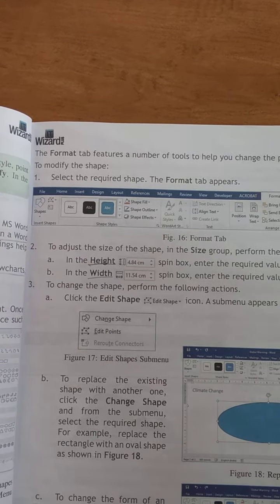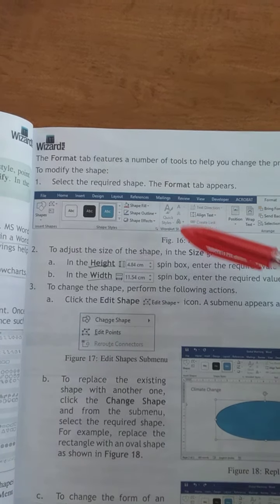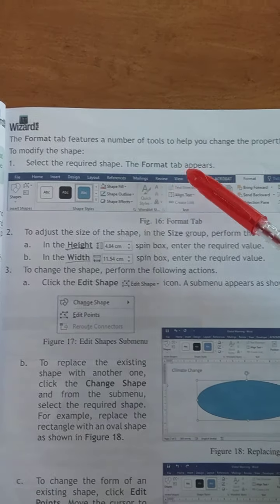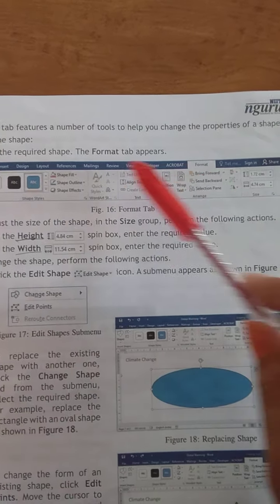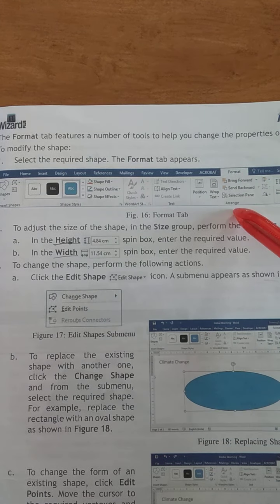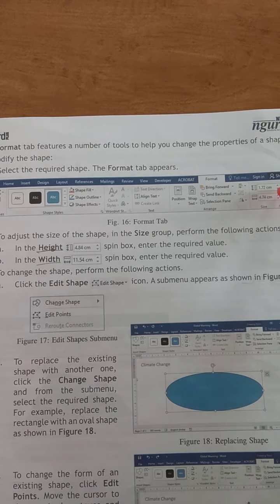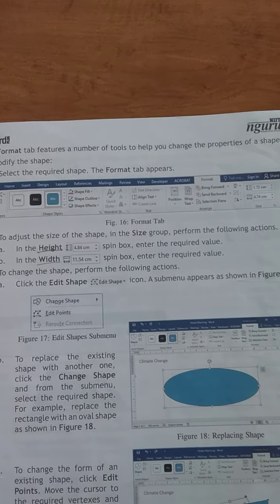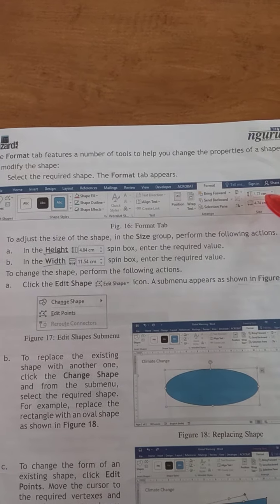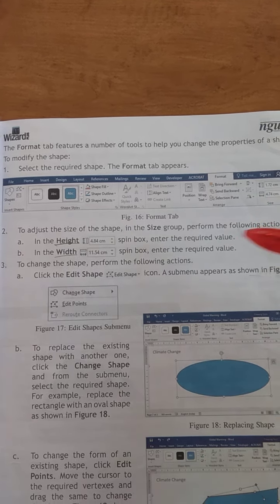You can change the height and width. Format means select the required shape, then the Format tab appears. See over here — the Format tab drop-down list. Here you can change the height and width, meaning custom height and width values.